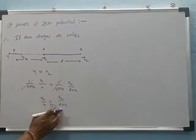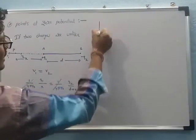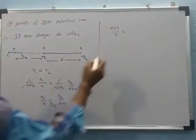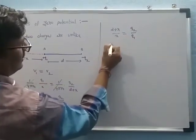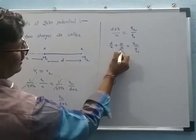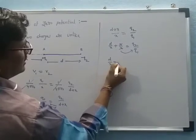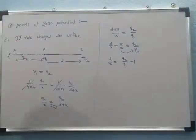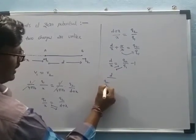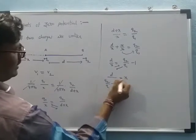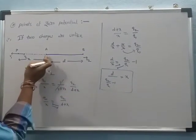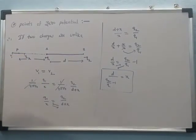Cross-multiplying: (D+X)/X = Q2/Q1. Dividing: D/X + 1 = Q2/Q1. Therefore D/X = Q2/Q1 − 1. Solving for X: X = D / (Q2/Q1 − 1). This is the formula for the position where the resultant electric potential is zero for unlike charges, and it is formed outside of the two charges.